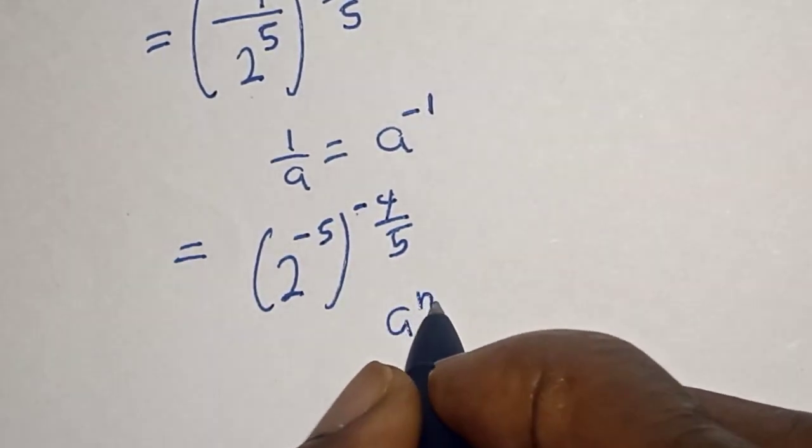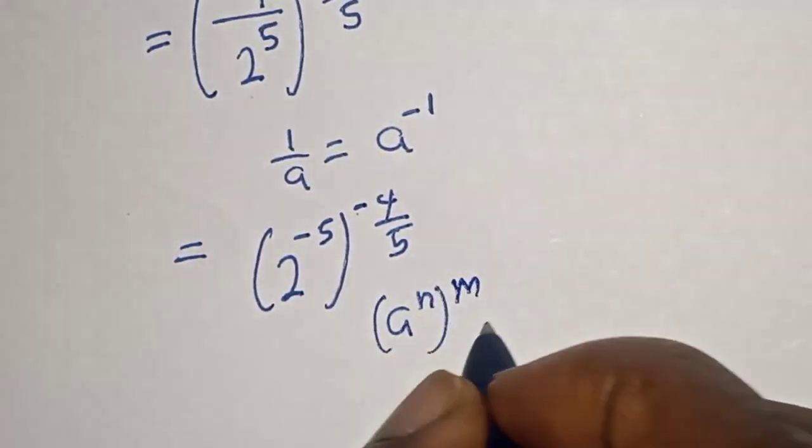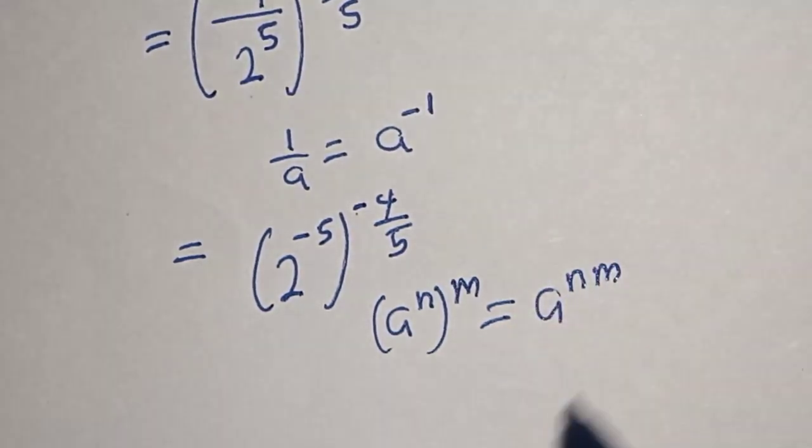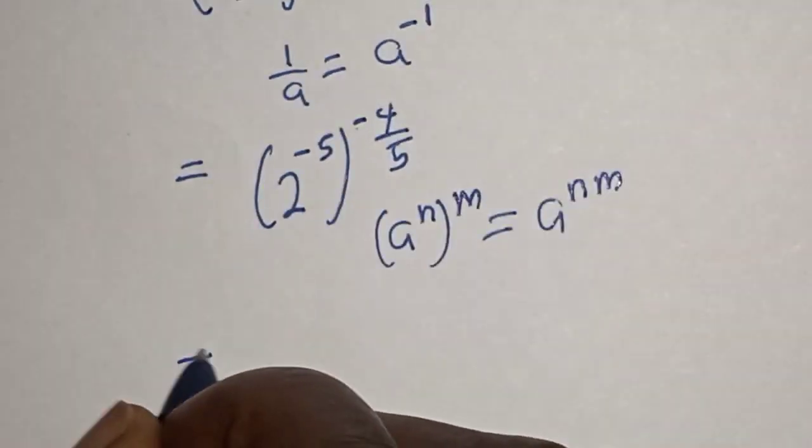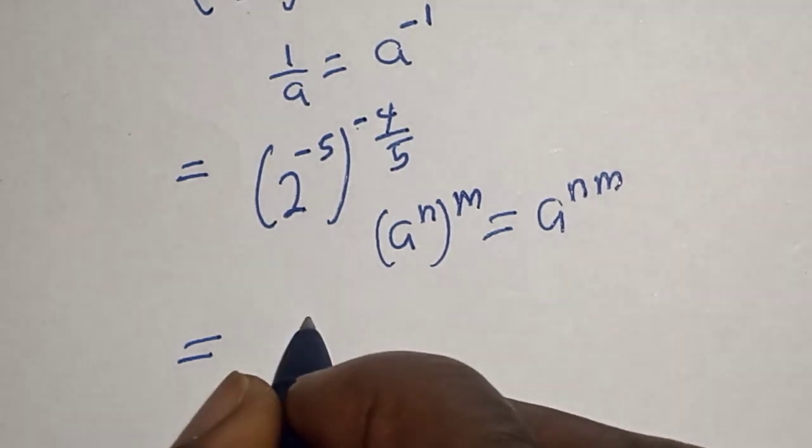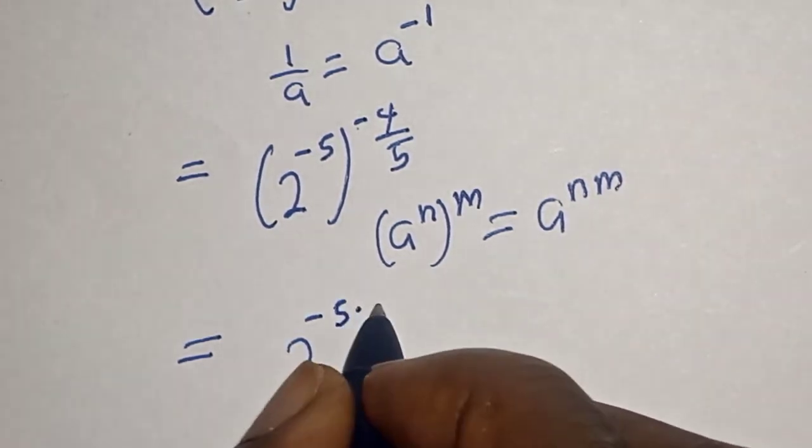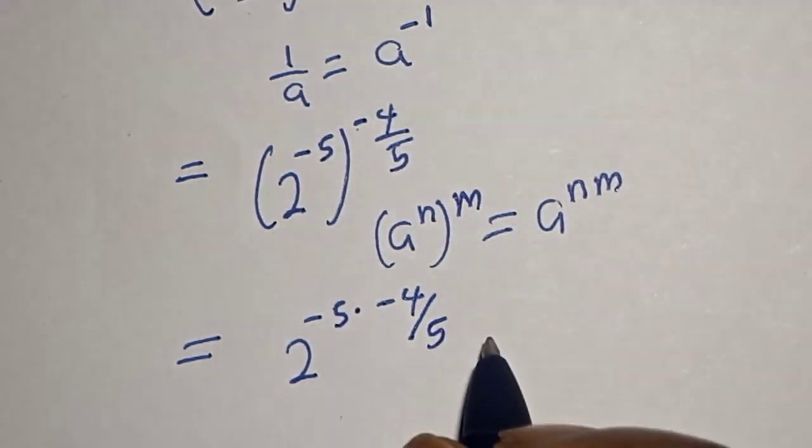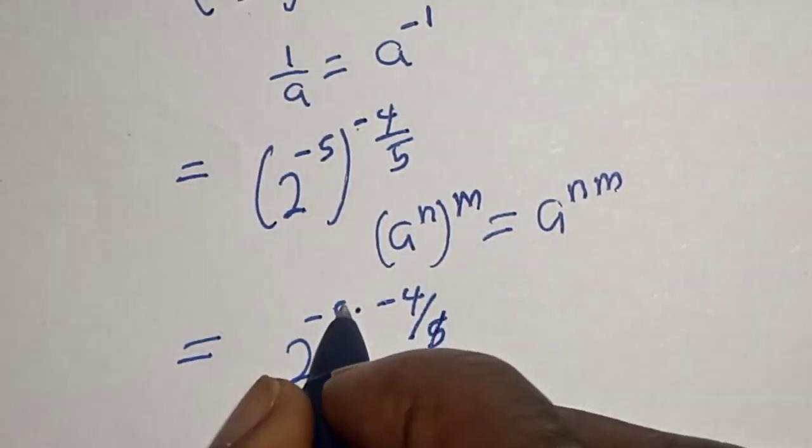a raised to power n, raised to power m, is equal to a raised to power n times m. Then this is equal to 2 raised to power minus 5 multiplied by minus 4 over 5, and this will cancel.